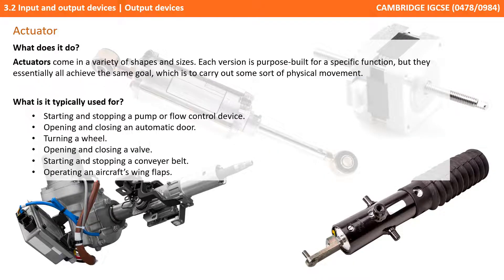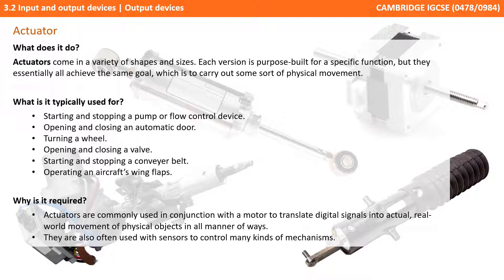They can be used for a vast array of things such as starting and stopping a pump or flow control device, opening and closing an automatic door, turning a wheel, opening and closing a valve, starting and stopping conveyor belts, operating an aircraft's wing flaps and much more. Actuators are commonly used in conjunction with a motor to translate digital signals into actual real-world movement of physical objects in all manner of ways. They're also used with sensors to control many kinds of mechanisms.